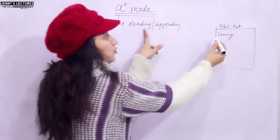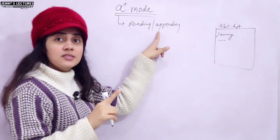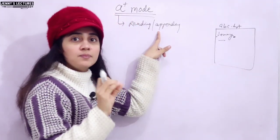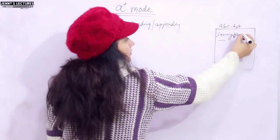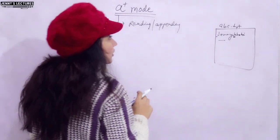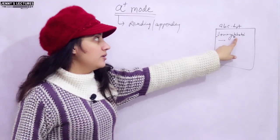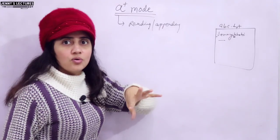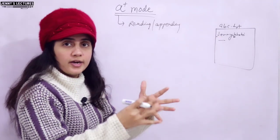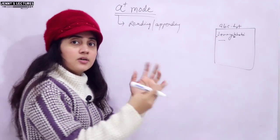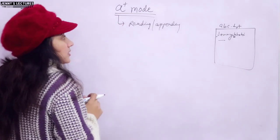For reading, the cursor would be at the beginning, so 'jenny' would be printed on the screen. For appending, the cursor would be at the end of the file, and you can append from there. So if I want to append 'khatri', it would be appended at the end of the file. It does not mean there are two separate pointers — one for reading and one for appending. There is only one pointer. If you are reading, that pointer moves to the beginning; if you want to append, the pointer moves to the end of the file.